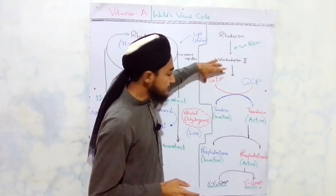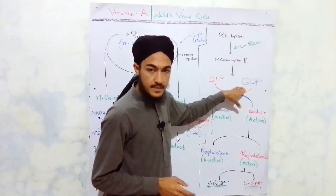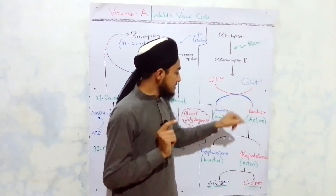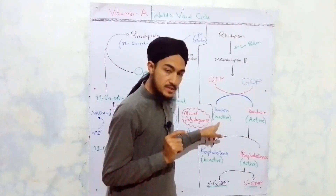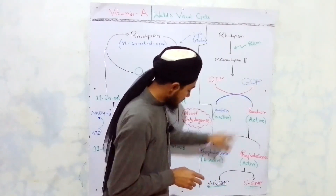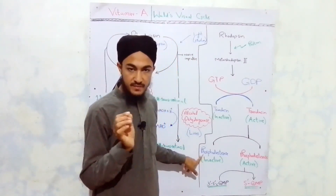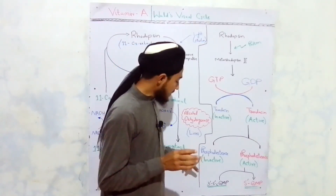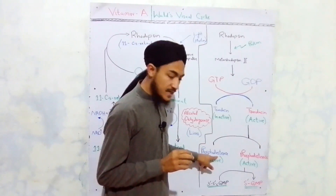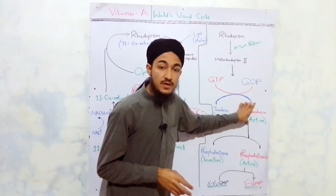The activation of the transducin protein requires energy, which is provided by GTP — guanosine triphosphate. GTP is converted to GDP (guanosine diphosphate) as one phosphate bond is broken, releasing the energy used to activate transducin. The activated transducin protein then activates the enzyme cGMP phosphodiesterase, where cGMP stands for cyclic guanosine monophosphate.